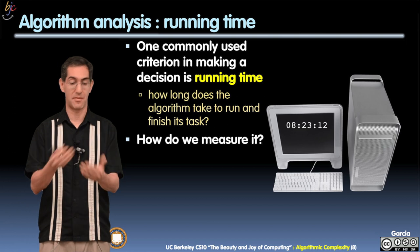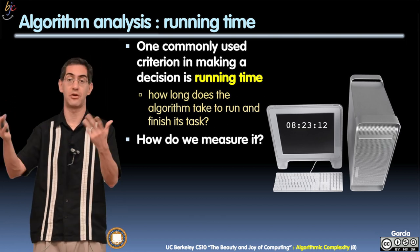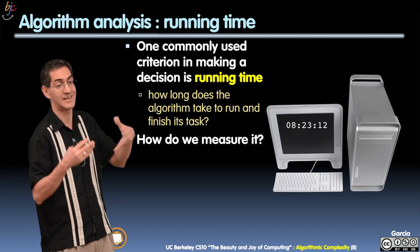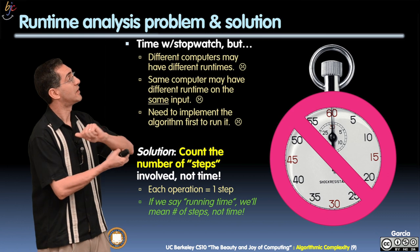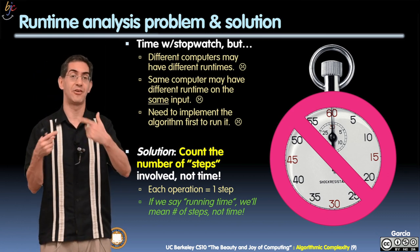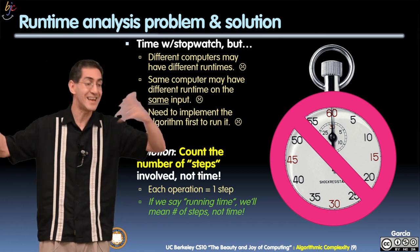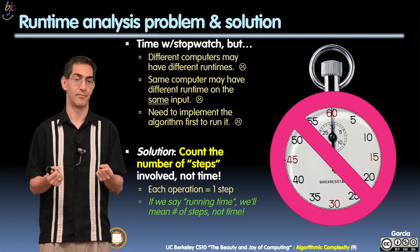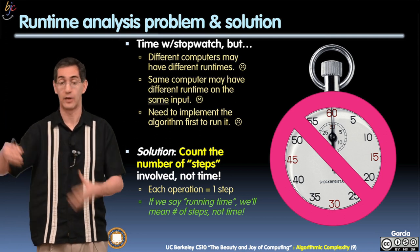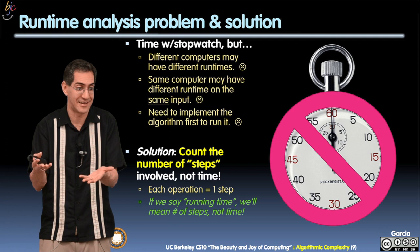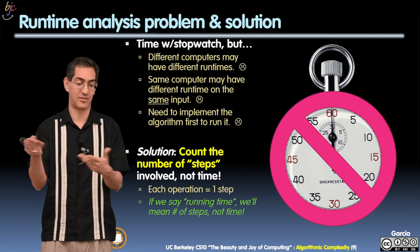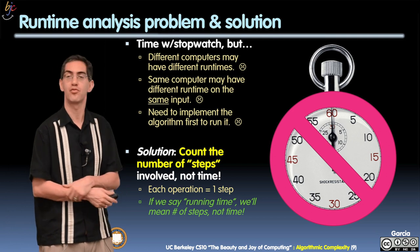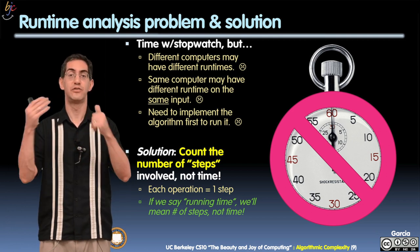One is, different computers may have different run times. I now test on my really fast computer, you test your same algorithm on your slow computer. All of a sudden my algorithm looks really great because your computer was slower. The same computer may have different run times for the same input depending on what else is running maybe. And you also need to implement the algorithm in order to run it. So we don't like that. We are going to cross that off and not consider user time. We're not going to consider stopwatch time ever.